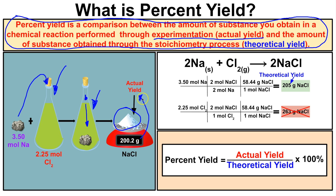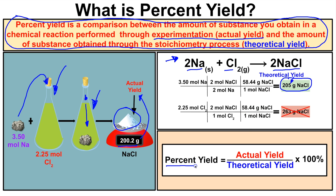Looking at the balanced equation, two moles of sodium reacts with one mole of chlorine to produce two moles of sodium chloride. When we run the stoichiometry and account for the limiting reactant, we find that 205 grams of sodium chloride should theoretically be produced. Our actual yield is 200.2 grams and our theoretical yield is 205 grams — the difference is due to human error or instrument error.